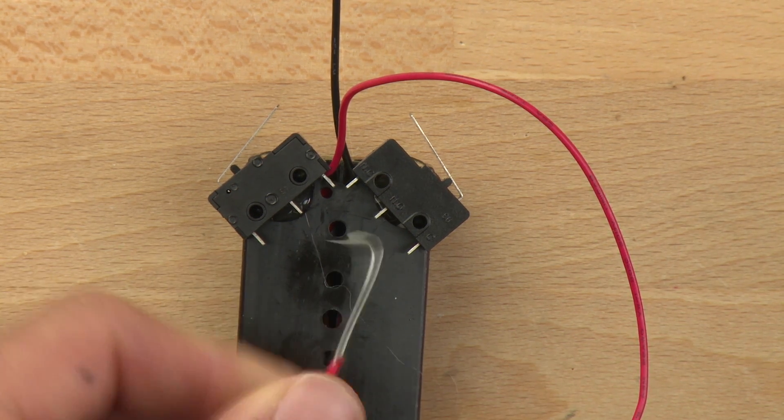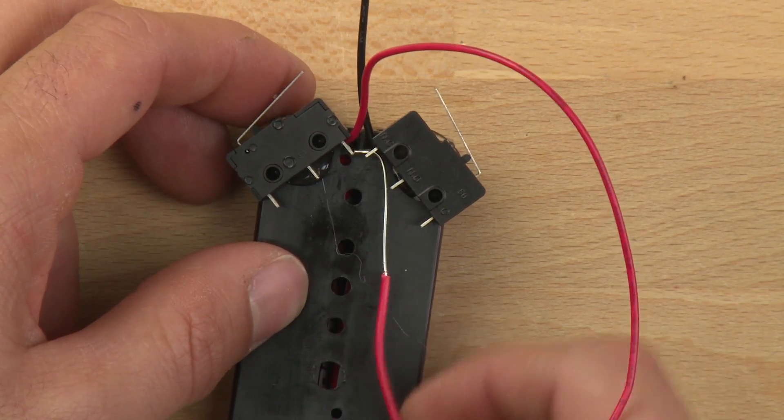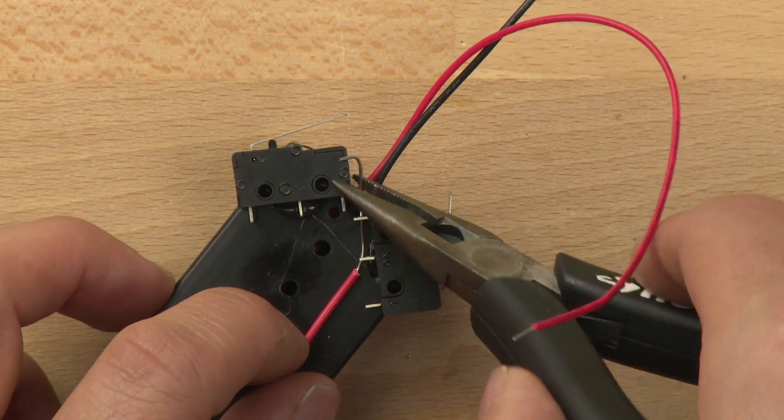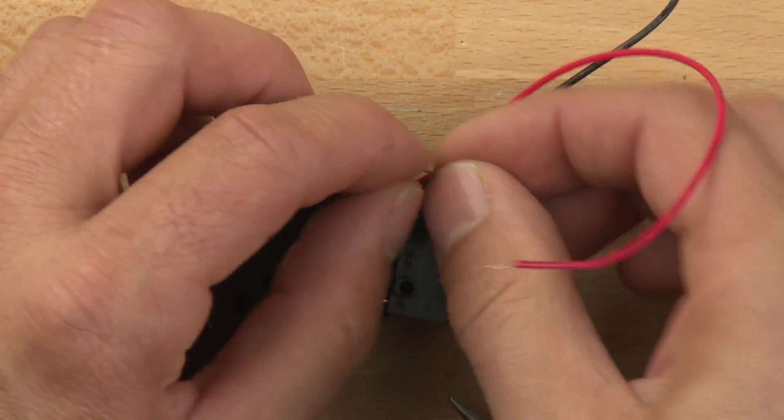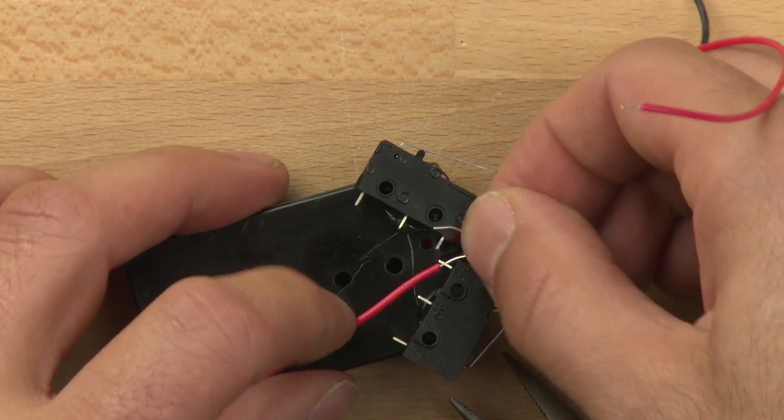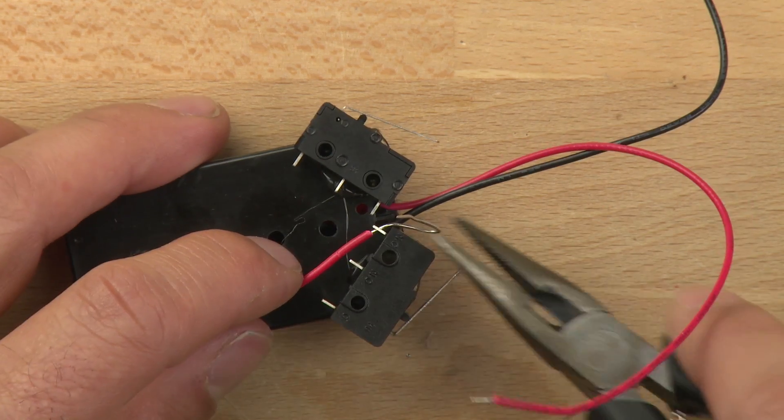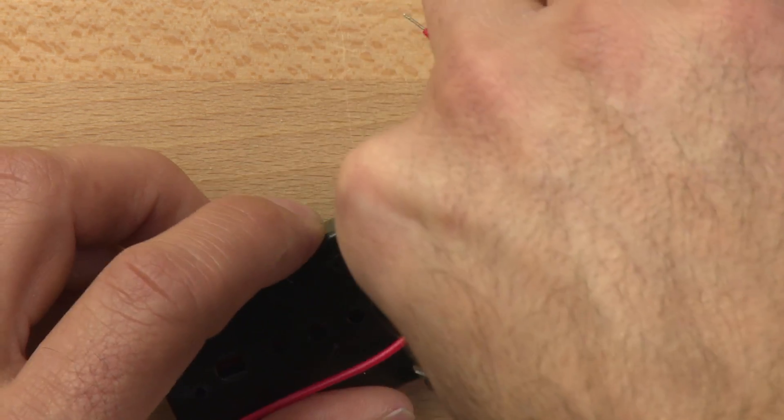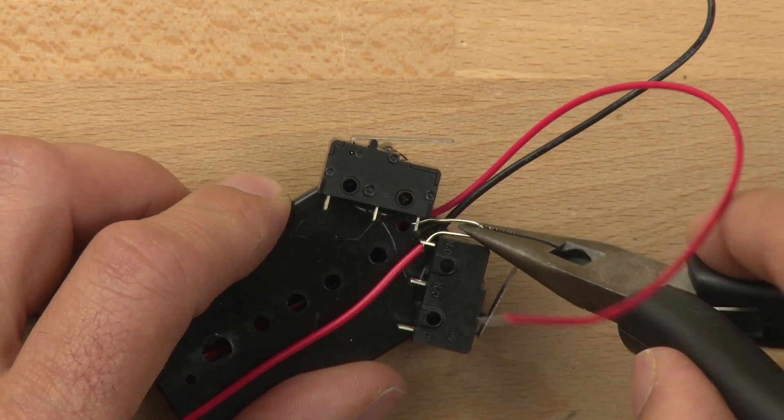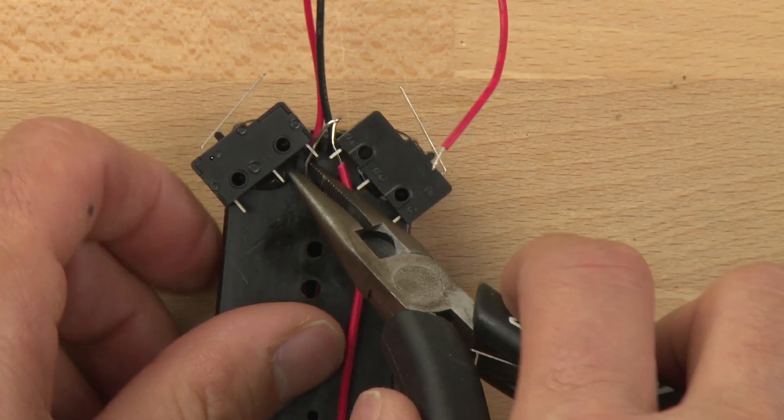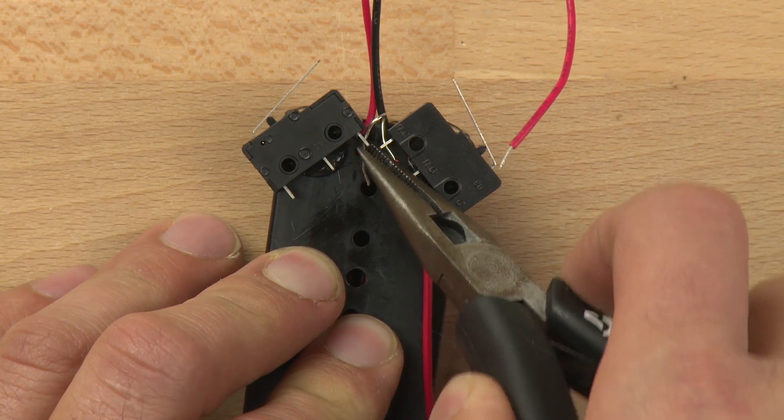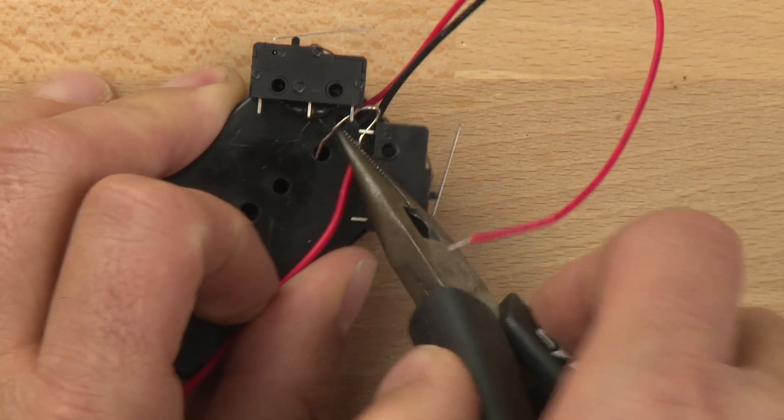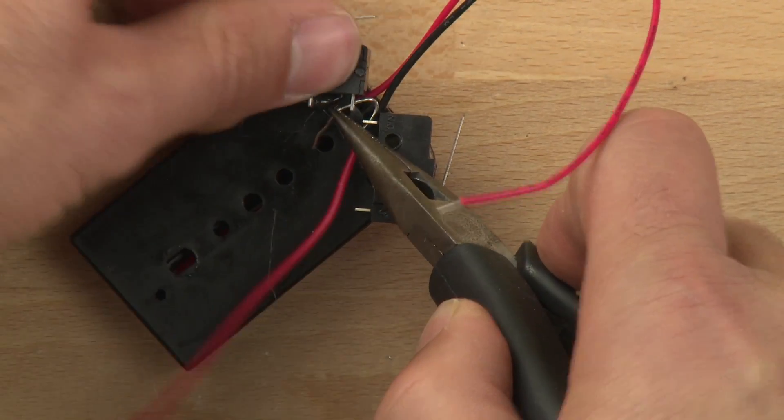So we'll take our needle nose and we're going to try and bend the wire so we can loop it through. See if we can make this work. And it's kind of tricky to do, but if you can get it, you want to run the wire through the hole in the leg of the switch because it's going to give you a better connection when you solder it. There we go.